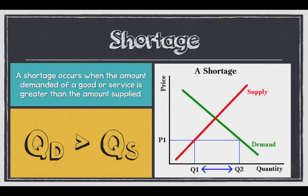What that really looks like is something like this. At price one, the quantity supplied is at Q1 and the demand is at Q2. That distance between the two is the size of the shortage. The price that a producer is willing to produce is at Q1; the price that we are willing to purchase is at Q2. We are willing to purchase more than is supplied — therefore we have what's known as a shortage.